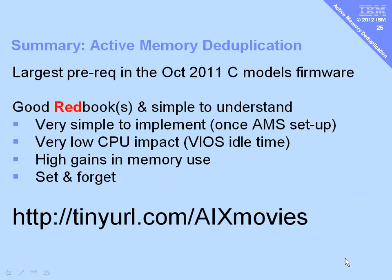So there we have it — active memory deduplication. The largest prerequisite is having the C models to get the right firmware that supports it. There's a very good Redbook available. It's very simple to implement once AMS is already up and running, with very low CPU use — in fact, probably none at all. But the gains are high: we get a lot of memory back by switching this on, and it's largely set and forget. Don't forget that if you want better quality versions of these movies or the extra command details, I'll put them at the website.